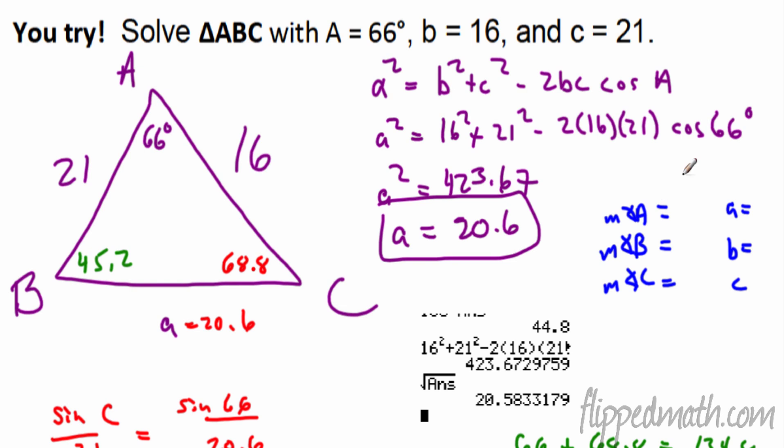So long story made long. Most people go for short there. But measure of angle A, 66 degrees. Measure of angle B is 45.2 degrees. Angle C is 68.8 degrees. A is, of course, 20.6. And B is 16. And C is 21. And that is it.